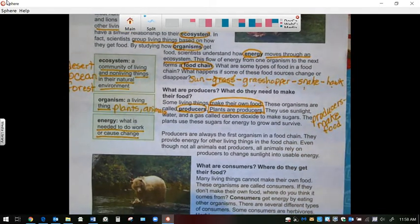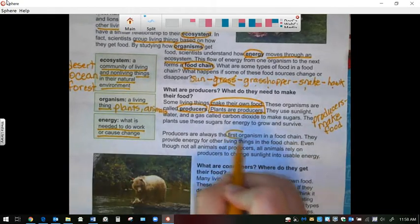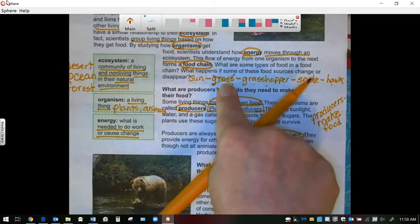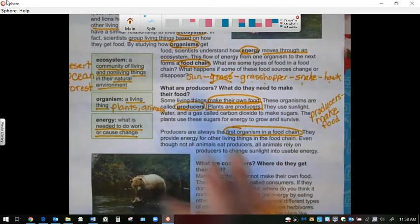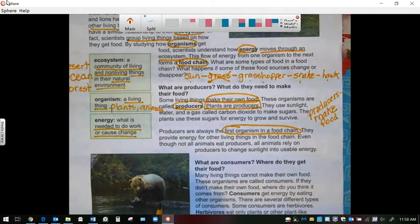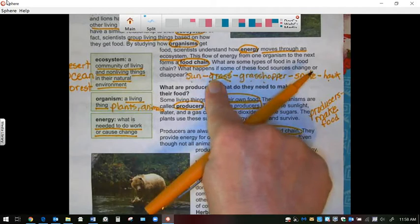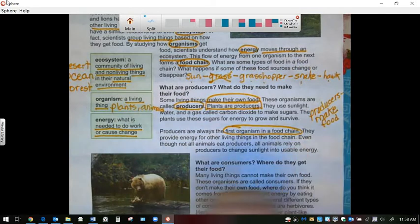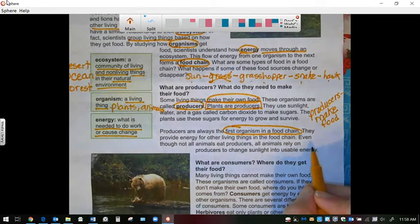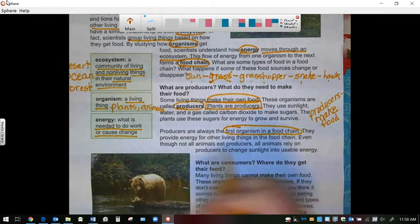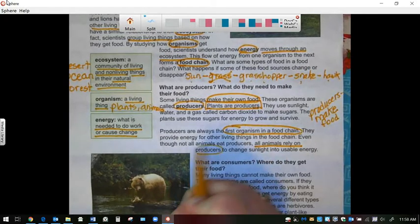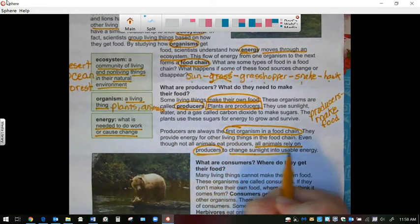Producers are the first organism in a food chain. That's why the grass was first after the sun. But if you don't have sun, the grass won't grow either. So the sun has to be first and then the first item is grass. They provide energy for living things in the food chain. Even though not all animals eat producers, all animals rely on producers to change sunlight into usable energy.